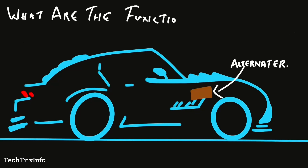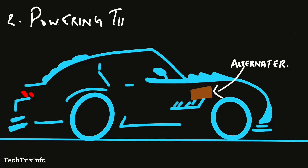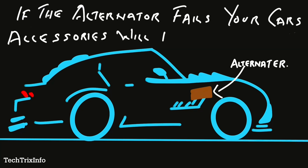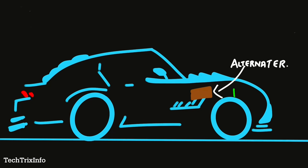Alternator. Do you know what are the functions of an alternator? The alternator's main function is to recharge the car battery. It also powers the accessories of a car like the dashboard, the starter motor, radio, and stuff like that. If the alternator fails, your car's accessories will die and the battery will also not get charged.